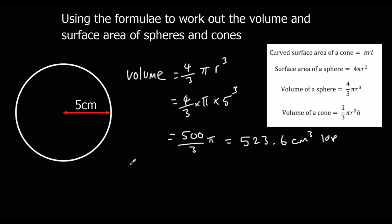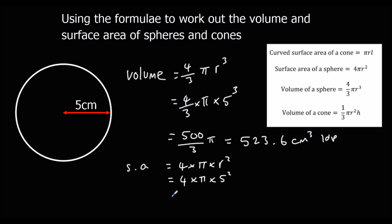For the surface area, we use the other formula: surface area of a sphere is 4 times pi times r squared. In this case r is 5, so it's 4 times pi times 5 squared. That gives us 100 pi, or as a decimal 314.2 centimeters squared to 1 decimal place.